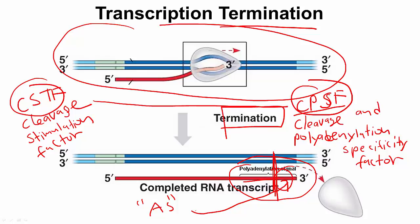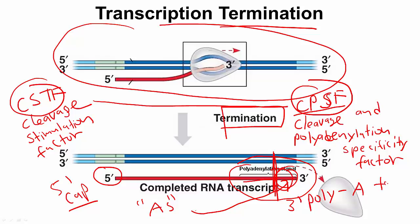After that, we have completed transcription — a completed RNA transcript. At the five-prime end, we have a five-prime cap, which will be covered in a later lesson. And at the three-prime end, we have what's called a polyadenylate tail, or poly-A tail. One thing of note: the RNA polymerase doesn't immediately dissociate from the DNA, but it does eventually as it keeps moving along the DNA template. There are different models for the exact mechanism, but we don't need to worry about that for now.